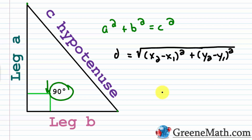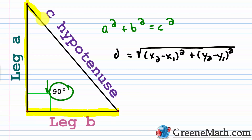What we can do is, if we're given three points, and if it's true that we have a right triangle, then the distance for leg A squared plus the distance for leg B squared should be equal to the distance of the hypotenuse squared. We know how to get the distance between any two points using the distance formula.